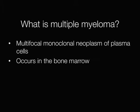Myeloma is a multifocal neoplasm of plasma cells, hence the term multiple myeloma. Another more modern term is plasma cell myeloma. The myeloma deposits arise in the bone marrow in sites such as the skull, ribs, long bones and vertebrae.